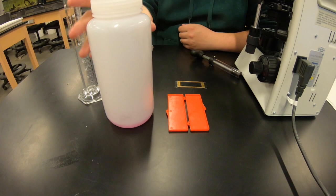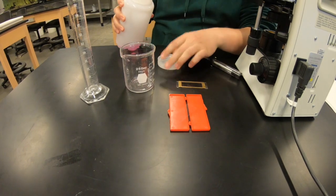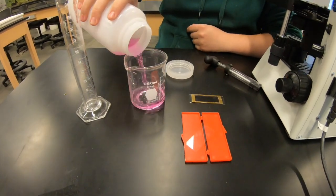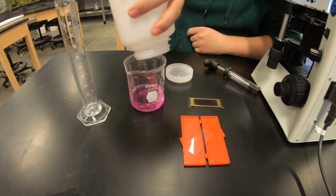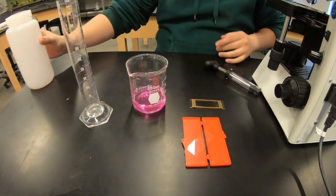So now we're going to determine the standing crop biomass of plankton. Once you get back into the lab, you're going to take your sample jar and pour it into a beaker.